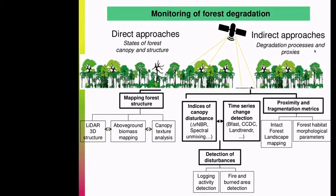Indirect approaches aim to characterize degradation processes. They mostly use optical indices of canopy disturbances and change detection methods to detect forest disturbances such as logging activities or fire. Other studies also focus on landscape metrics to characterize the level of degradation — for example, fragmentation.